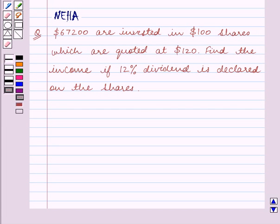Hello and welcome to the session. In this session we will discuss the following question. $67,200 are invested in $100 shares which are quoted at $120. Find the income if 12% dividend is declared on the shares. Let's start the solution now.